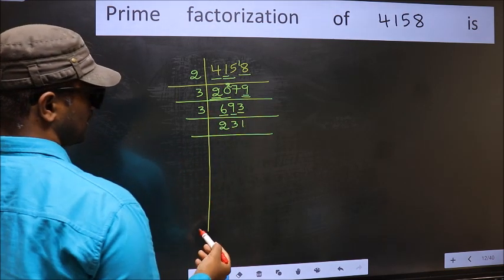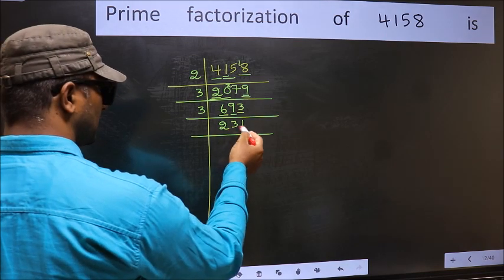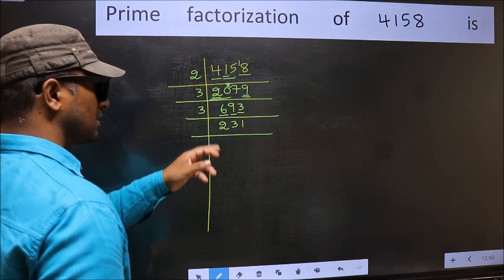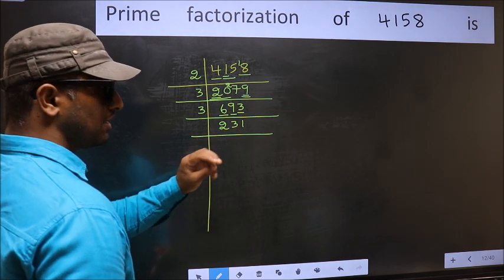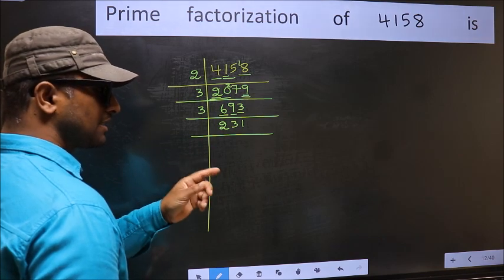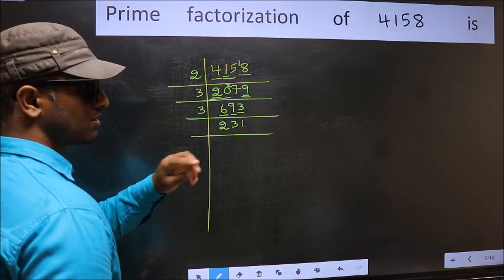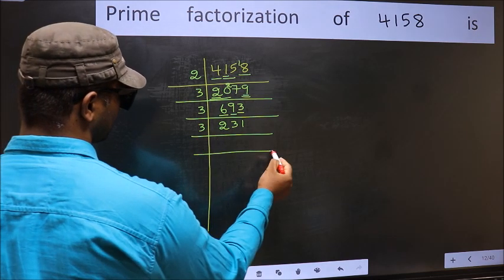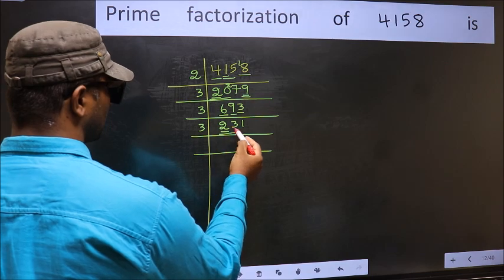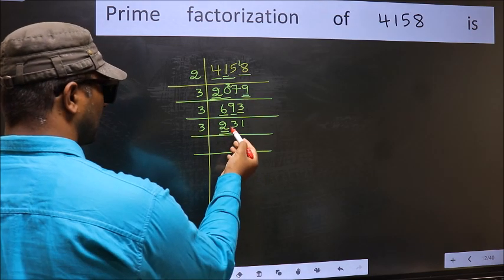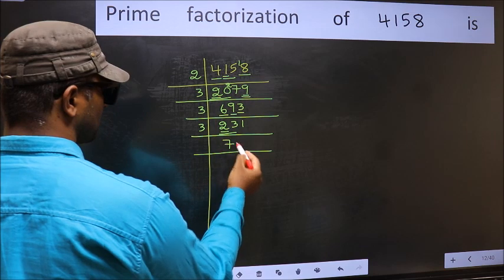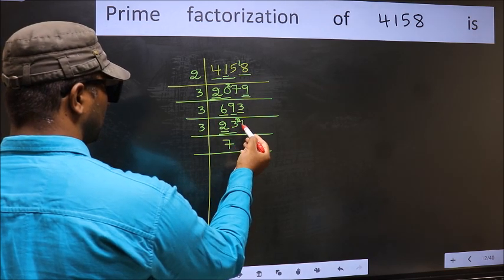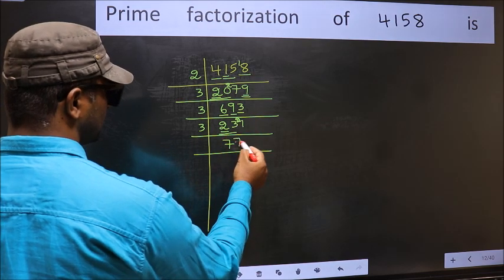When do we get 3 in the 3 table? 3 ones: 3. Now to check whether it is divisible by 3 or not, add the digits: 2 plus 3 plus 1 equals 6, and 6 is divisible by 3. So this number is also divisible by 3, so take 3 here. First number 2 is smaller than 3, so take 2 numbers: 23. A number close to 23 in the 3 table is 3 sevens: 21. 23 minus 21 is 2, carried forward: 21. When do we get 21 in the 3 table? 3 sevens: 21.